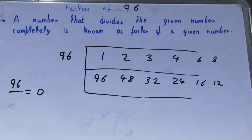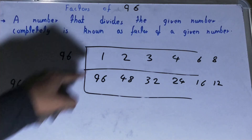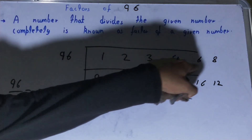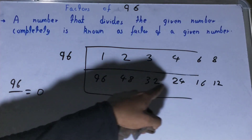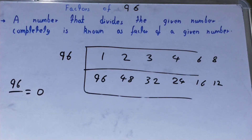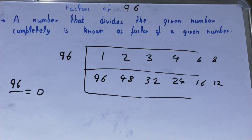After 11 comes 12, which is already in our list, so our work is done. The complete set of factors for 96 is: 1, 2, 3, 4, 6, 8, 12, 16, 24, 32, 48, and 96. That was all about the factors of 96. If you found the video helpful, please hit the like button, consider subscribing, and thanks for watching.